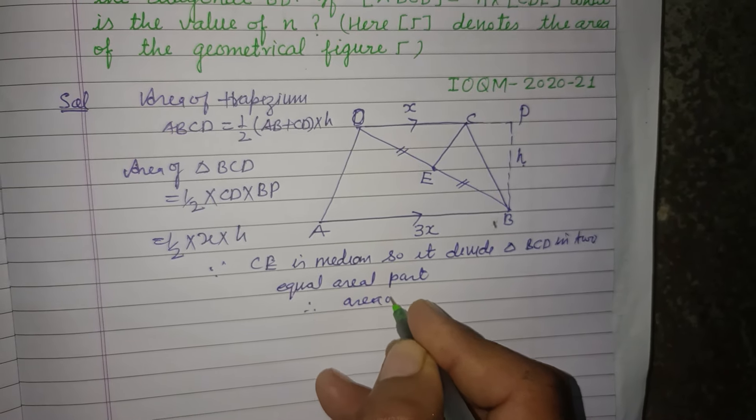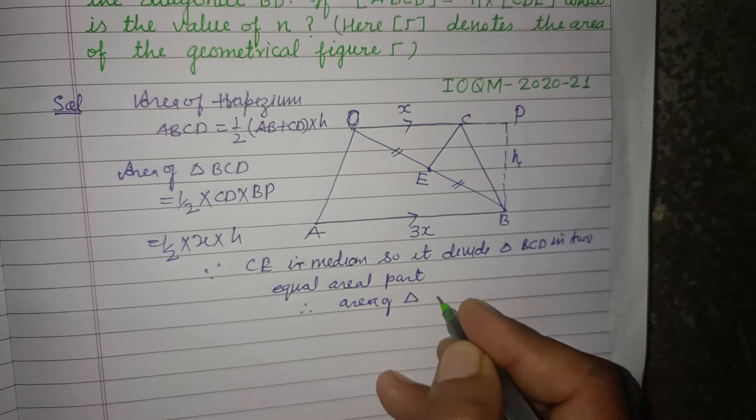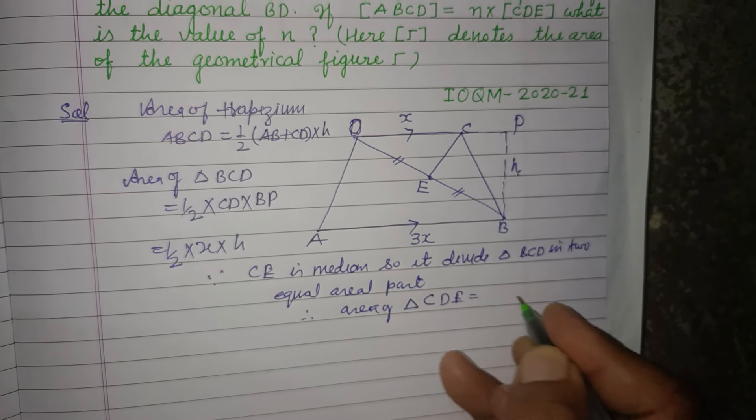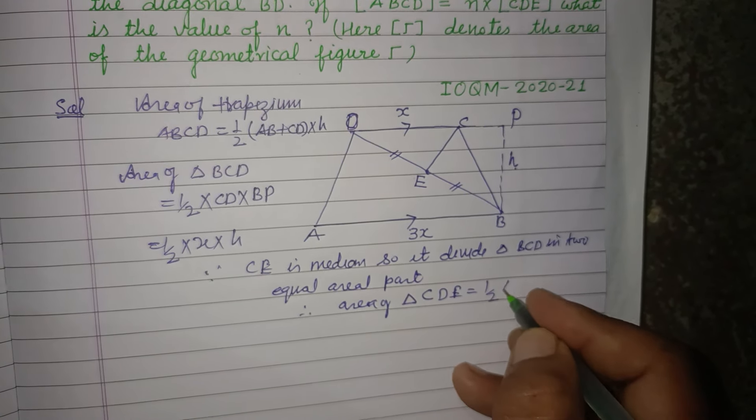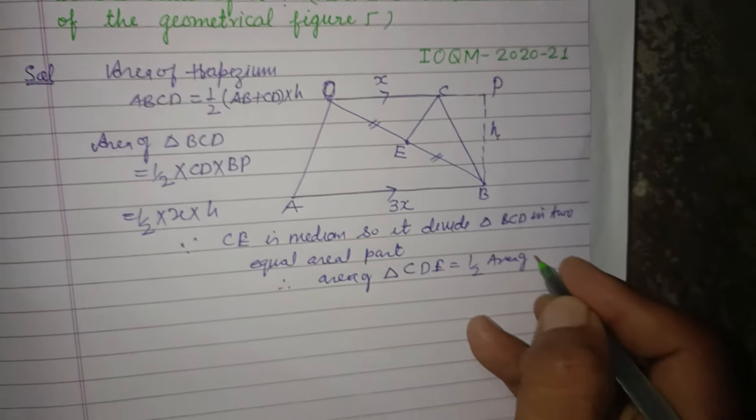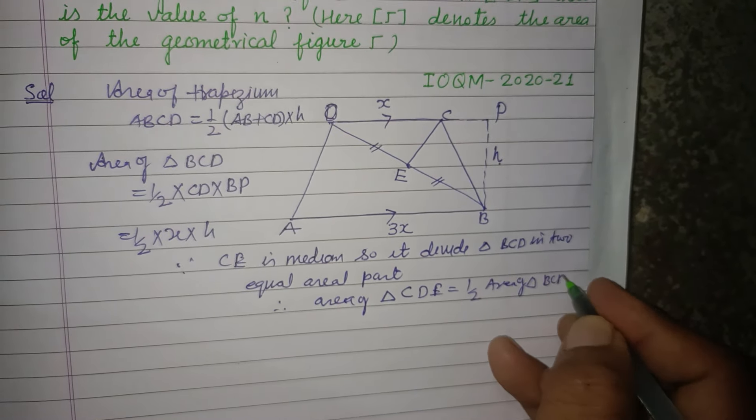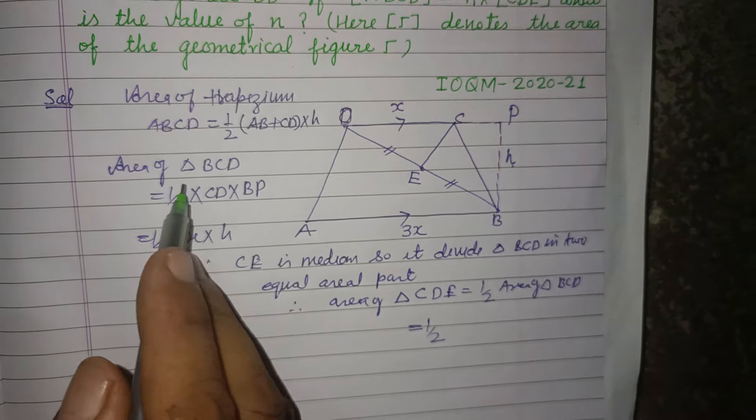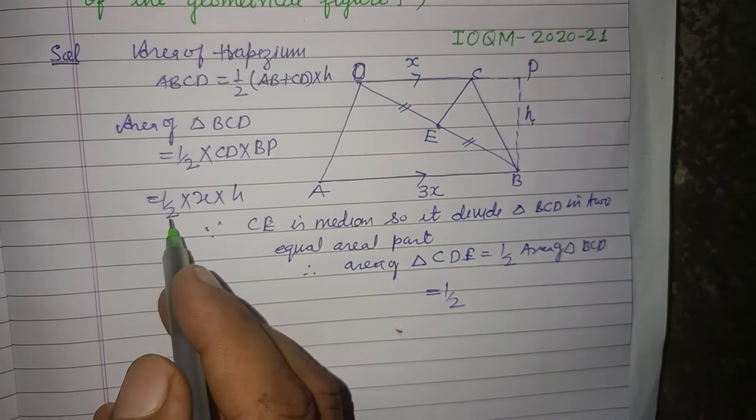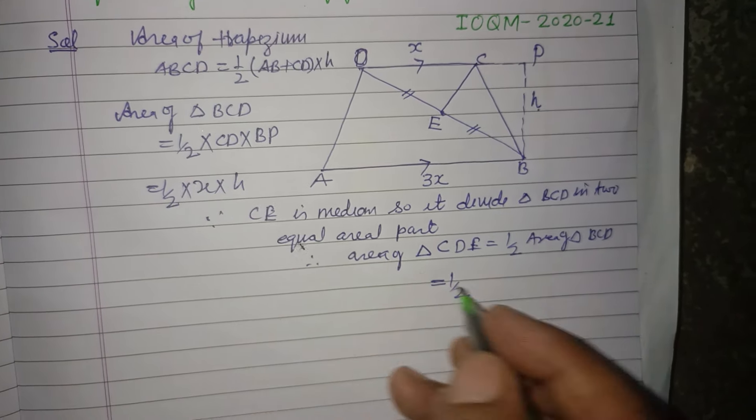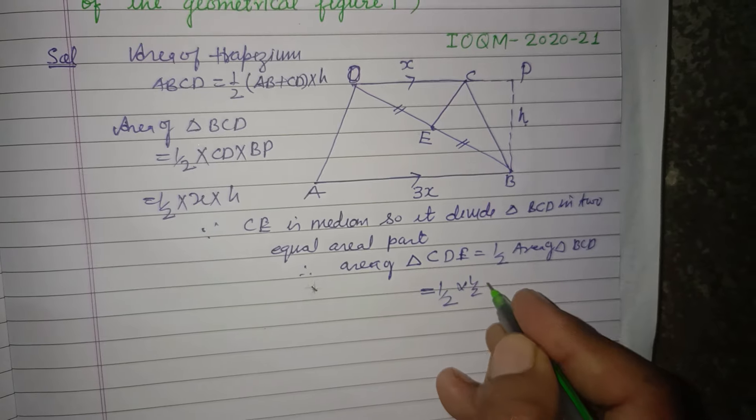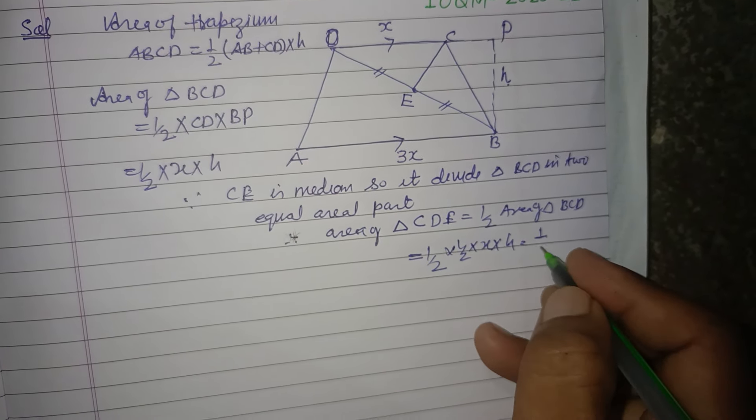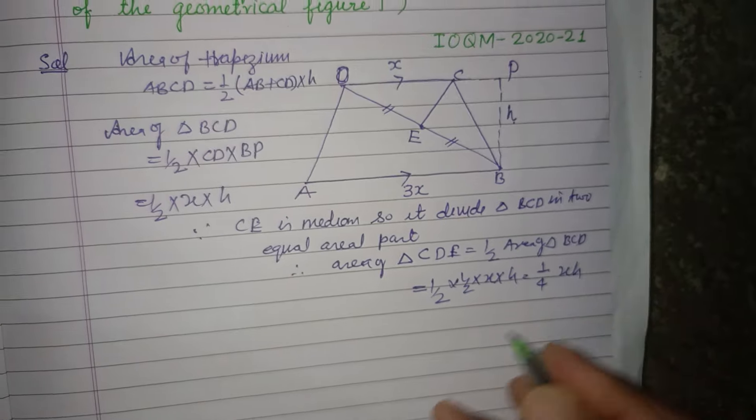Therefore, area of triangle CDE equals half of area of triangle BCD. And we have obtained area of triangle BCD as half of x into h. So this is half into half, which is one-fourth x into h.